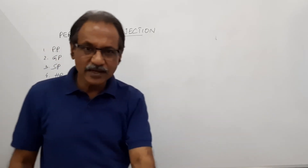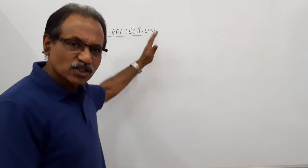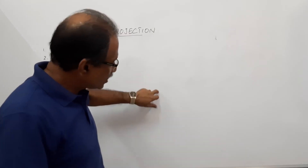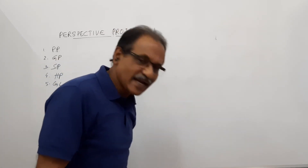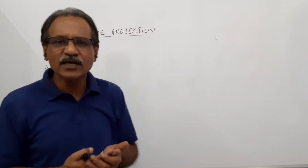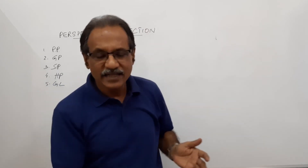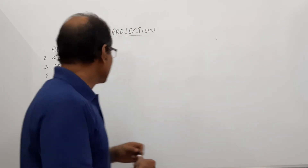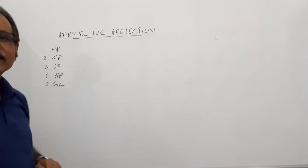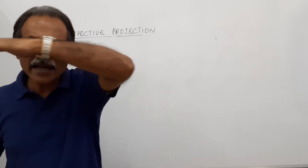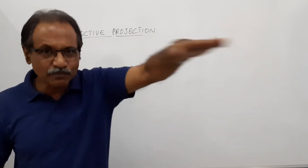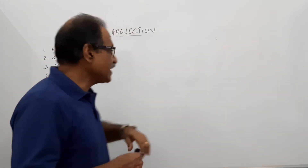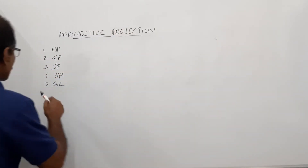The fifth term is ground line (GL). The ground plane meets the picture plane at a line — that line is called the ground line. It is similar to the XY line where the HP and VP meet. Next is the horizon line — the horizon plane meets the picture plane at a line, and that line is called the horizon line.